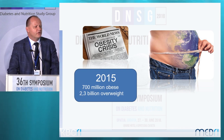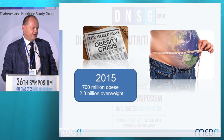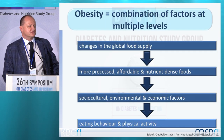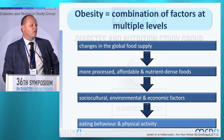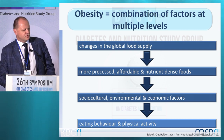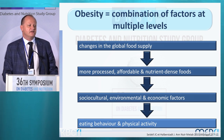At the moment, the world faces a real obesity crisis. We are very near 1 billion obese people in the world, and currently almost 2.5 billion people are overweight. Obesity is a combination of factors at multiple levels. Nowadays we have changes in the global food supply — more processed, affordable, and energy-dense food — and because of this, along with social, cultural, environmental, and economic factors, people are changing their eating behavior and especially their physical activity.